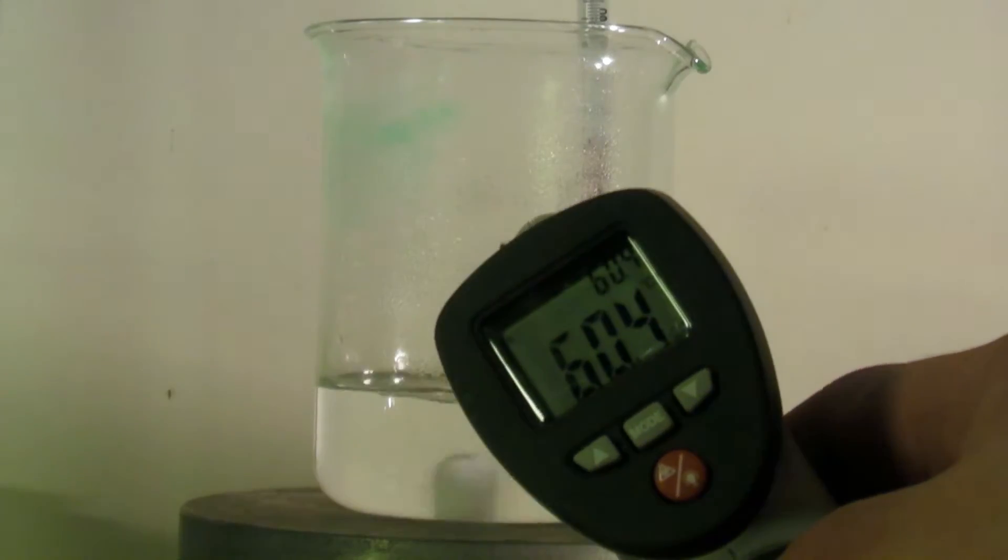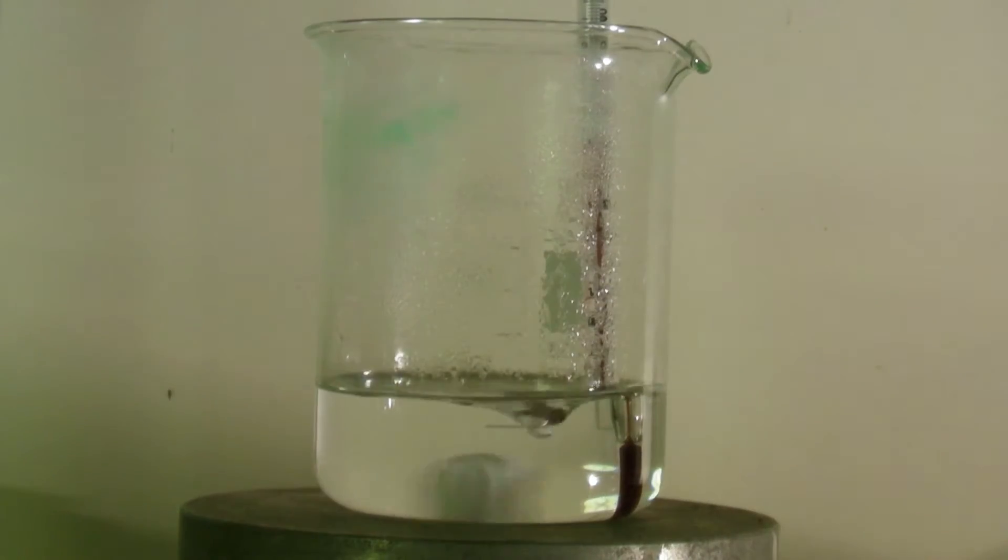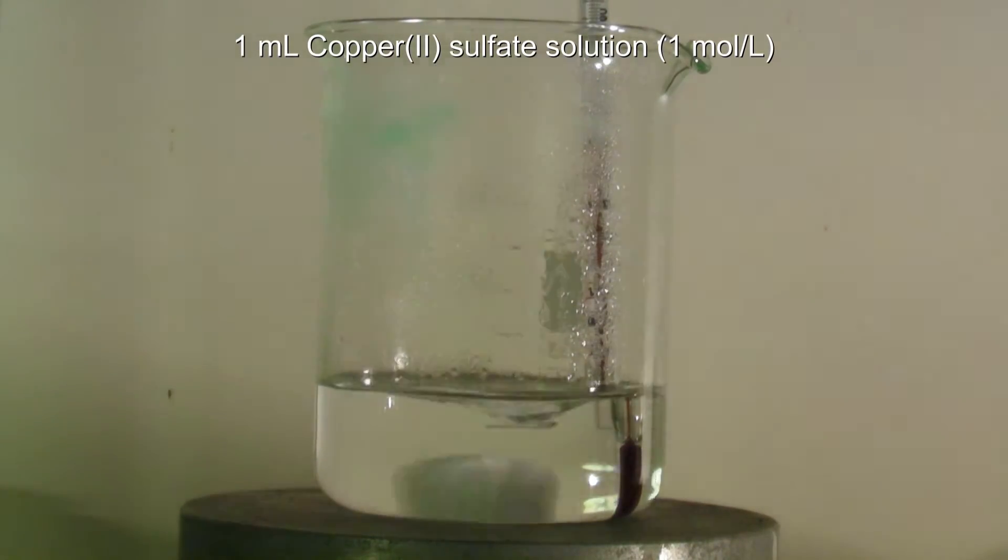When the solution has reached 60 degrees, 1 milliliter of a 1 molar watery solution of copper 2 sulfate is added while stirring vigorously.